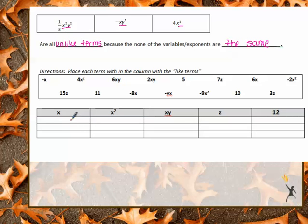Let's look at the practice problem at the bottom. Directions: place each term within the column with the like terms. So if we look at the like terms, we have X, X squared, XY, Z, and 12.